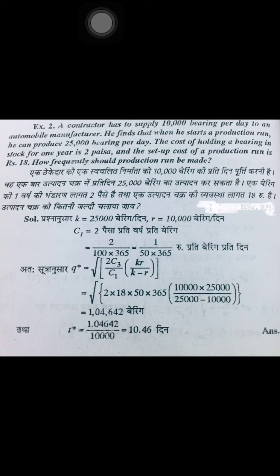Note that one cost is in paise and the other in rupees — units must be consistent when solving numerical problems. Converting C1: divide by 100 to convert paise to rupees, and divide by 365 to convert per year to per day. Substituting all values into the Q* formula gives Q* = 14,642 bearings. Then T* = Q*/R = 14,642/10,000 ≈ 10.46 days. So the production cycle should be restarted every 10.46 days.